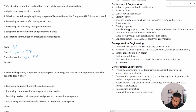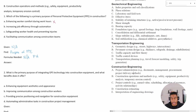Option A says enhancing worker comfort during work hours — no. Personal protective equipment is exactly what it sounds like: equipment or things that you wear or put on for your safety, so it's not necessarily for comfort. Option B, increasing job efficiency through automation — no, nothing dealing with automation here.